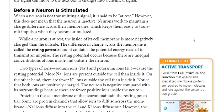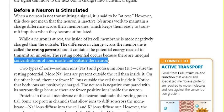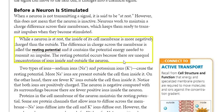Before the neuron is stimulated, the neuron cell is in a resting state. We call this the resting potential. Resting potential means that the inside of the cell is negatively charged while the outside is positively charged. This resting potential occurs because of an unequal concentration of ions inside and outside the neuron. There are two types of ions controlling this process: sodium ions (Na+) and potassium ions (K+).